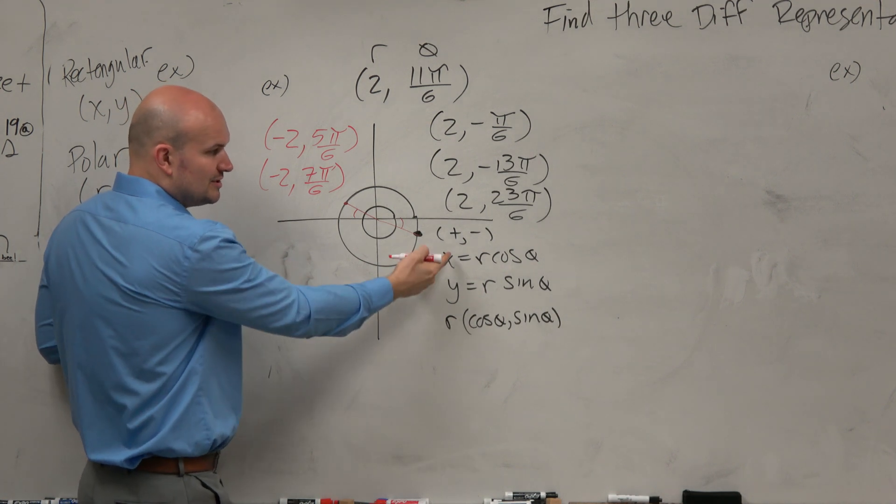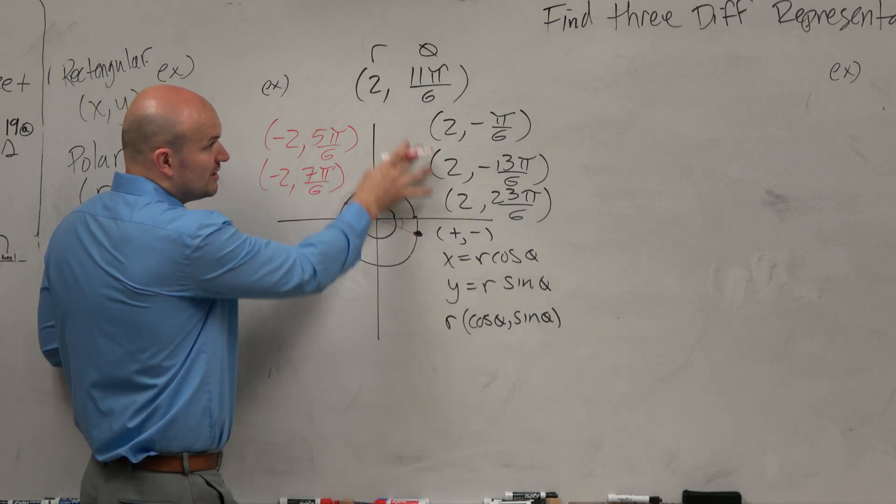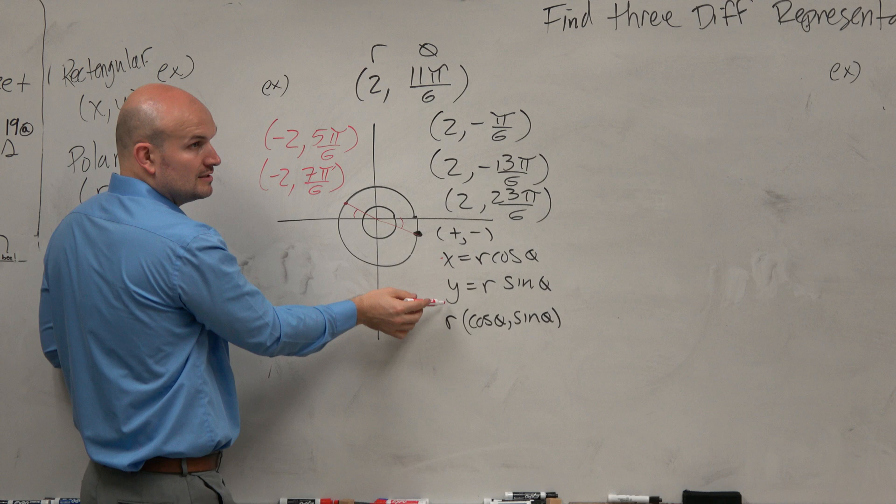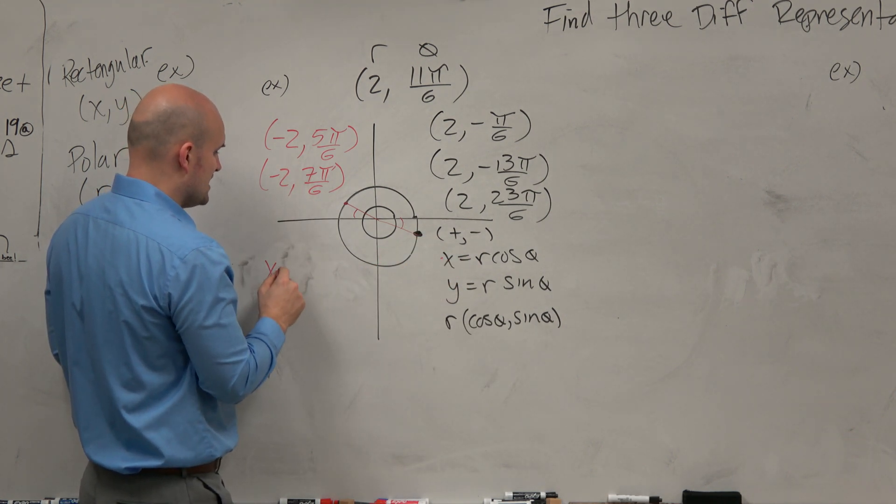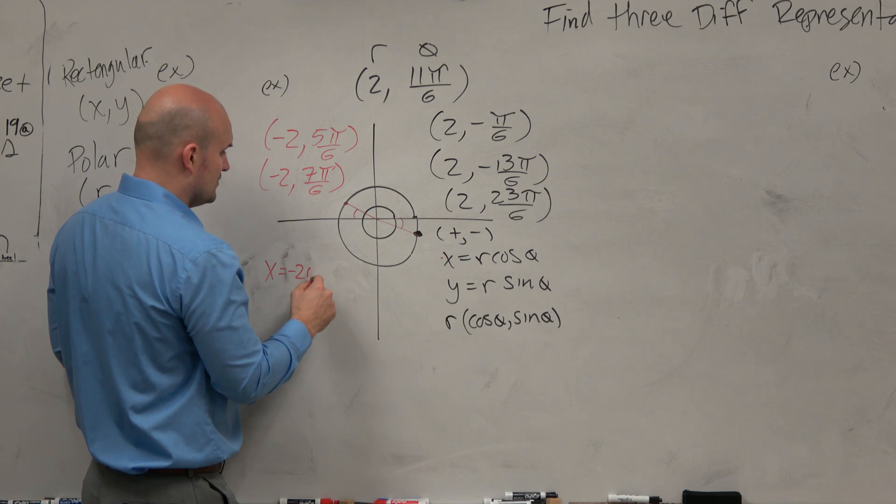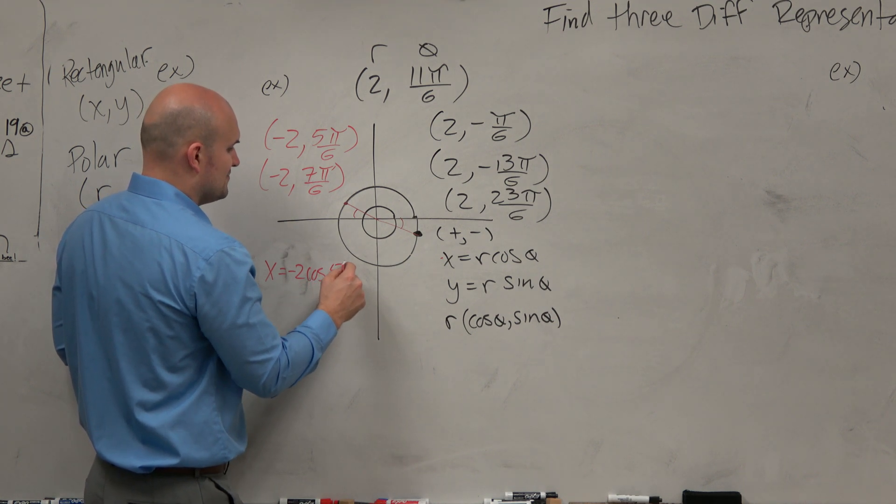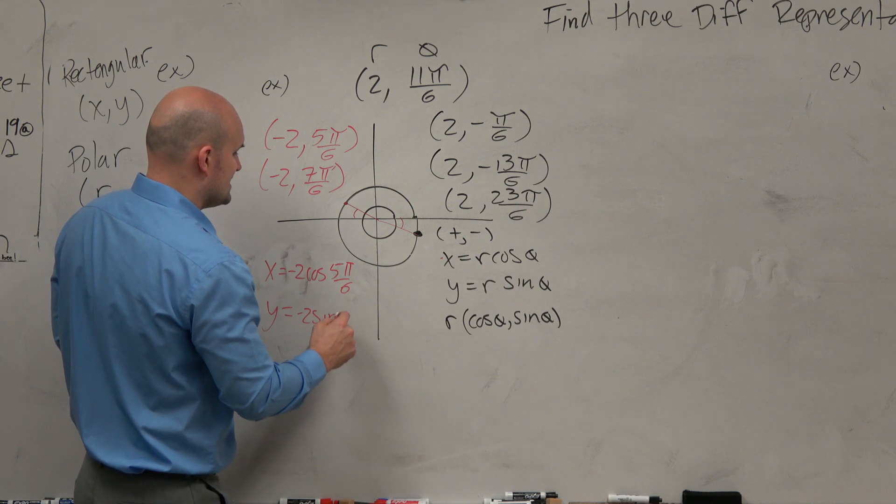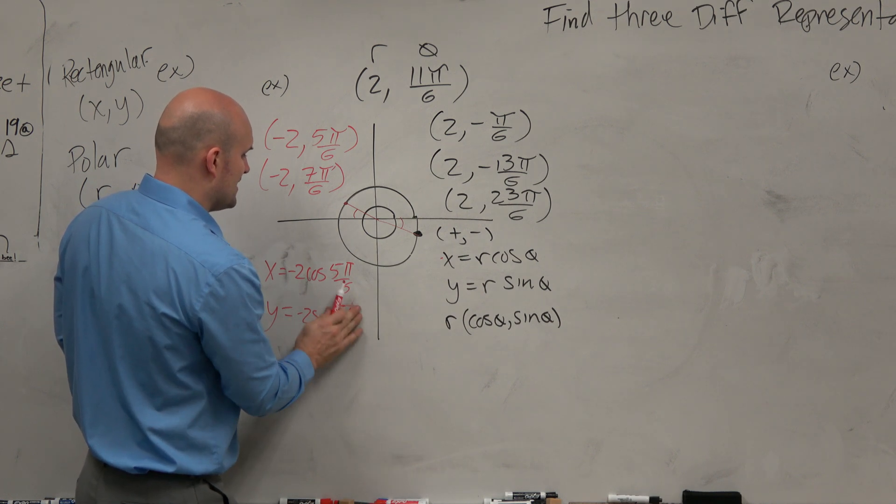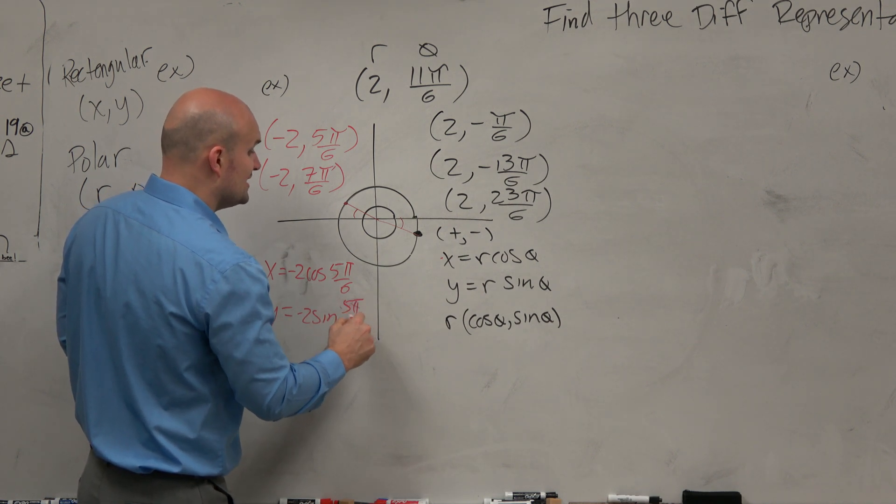Now what I'd like you guys to try, you guys can type this into your calculator. Type any one of these into your calculator for x and y. You're going to get whatever those coordinate points are. And guess what? If you type in it this way, negative 2 times the cosine of 5π over 6. And if you do y equals negative 2 sine of 5π over 6, you're going to get the same answers.